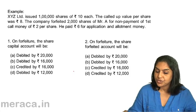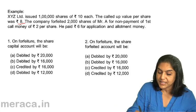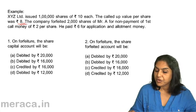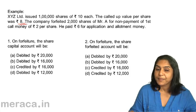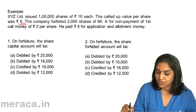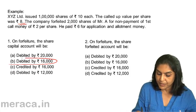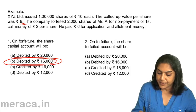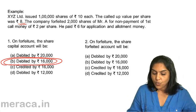XYZ Ltd issued 1 lakh shares. The called-up value is Rs 8 only. The company forfeited 2,000 shares. Share capital account will be debited with only the called-up value, which is Rs 8 per share into 2,000 shares — that is Rs 16,000. Share capital should be debited by Rs 16,000. So, the correct answer for question one is B.